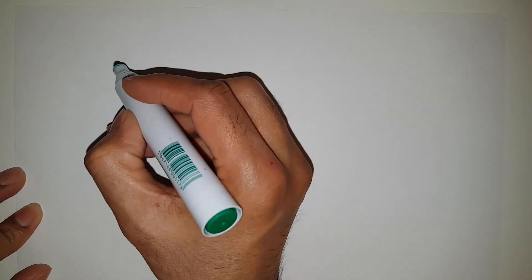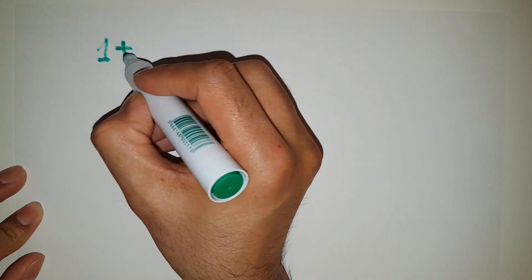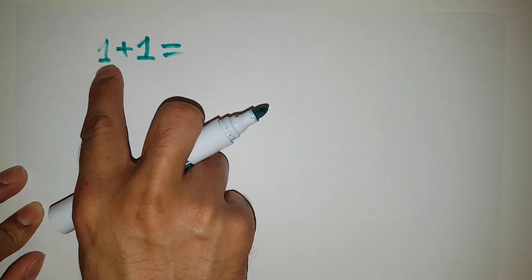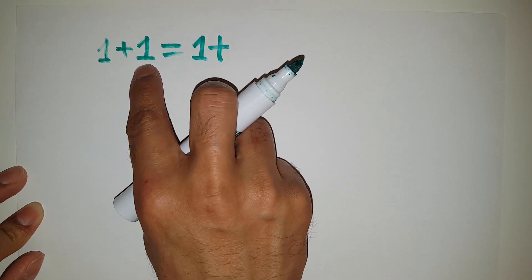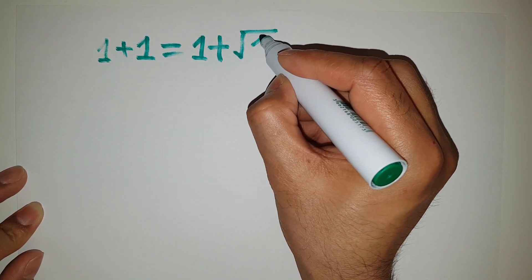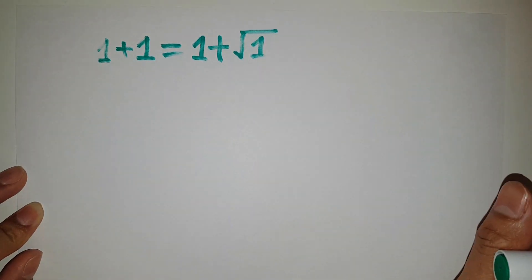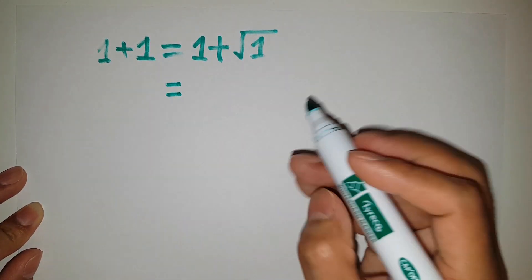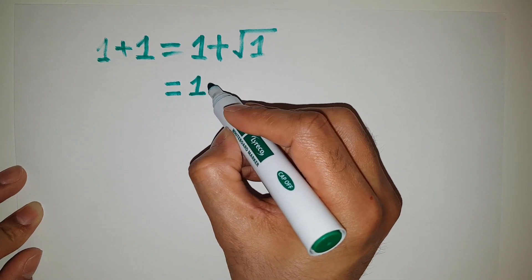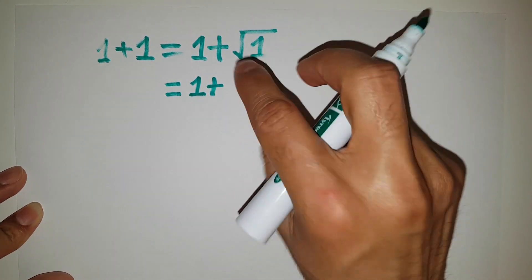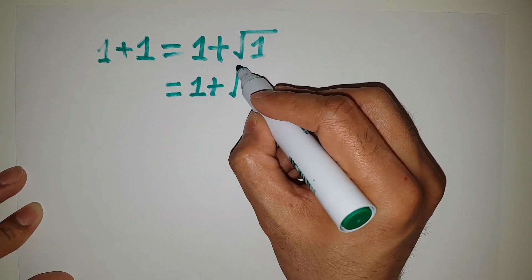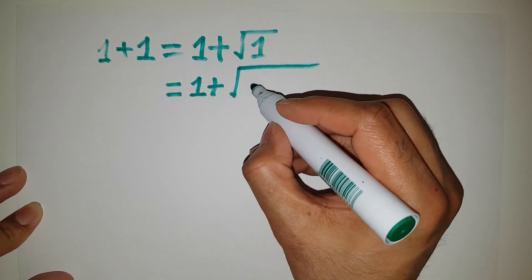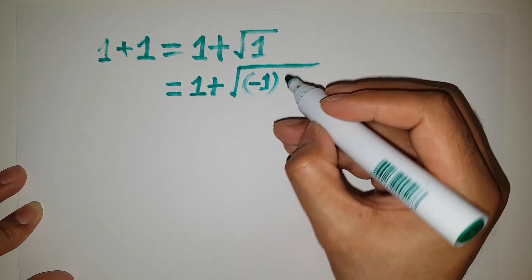In order to prove that 1 plus 1 is equal to 0, I'm writing this equation. I'm writing 1 plus 1. I'm keeping this first 1 here, and I'm writing the second 1 as square root of 1, because we know square root of 1 is equal to 1 — there is no change. Then I'm keeping this 1 the same, plus I'm writing this other 1 as the whole square root of minus 1 times minus 1.